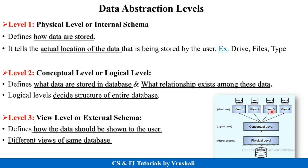The last one is view level — view level decides how data should be shown to the user. There is only one database, but one database can have multiple views as per the requirement. For example, in a college management system, teachers have a different view, students have a different view, and parents have a different view. So remember: physical level is how data is stored, conceptual level is what data is stored, and view level is how data should be shown to the user.